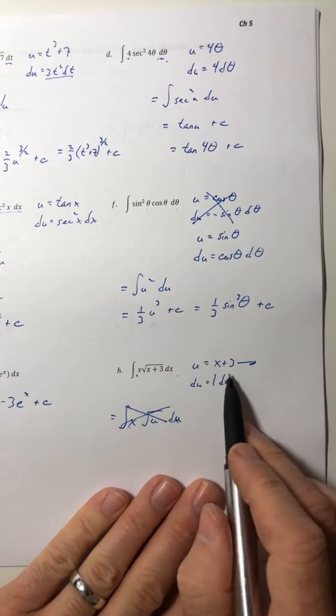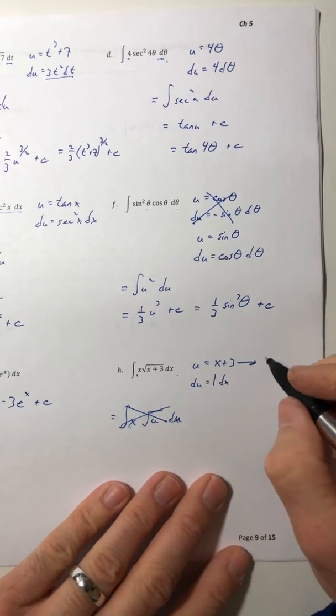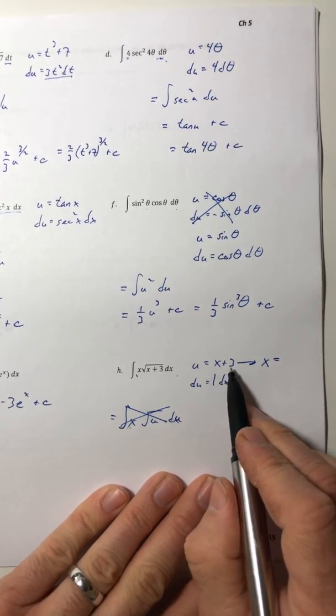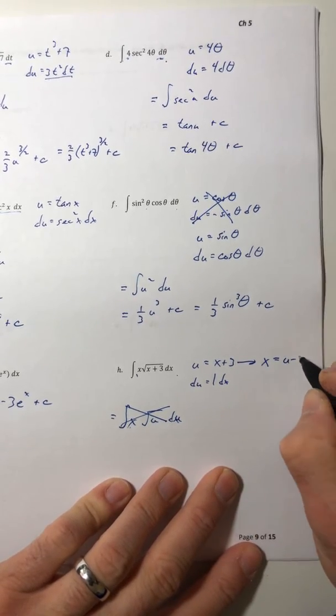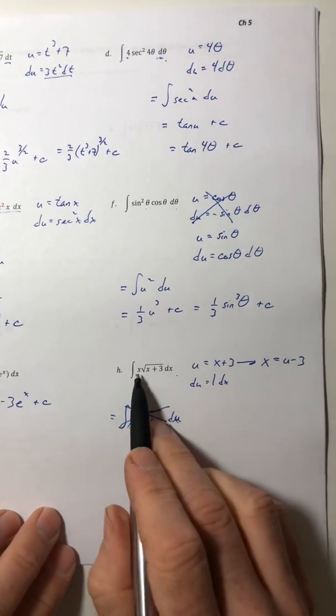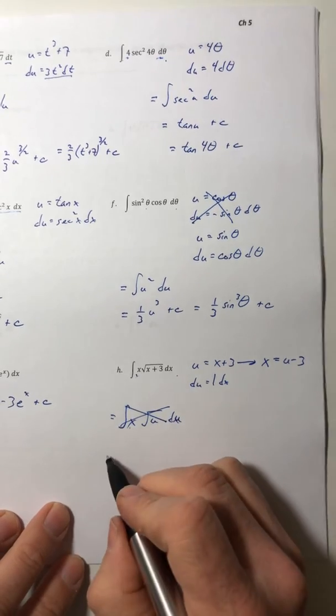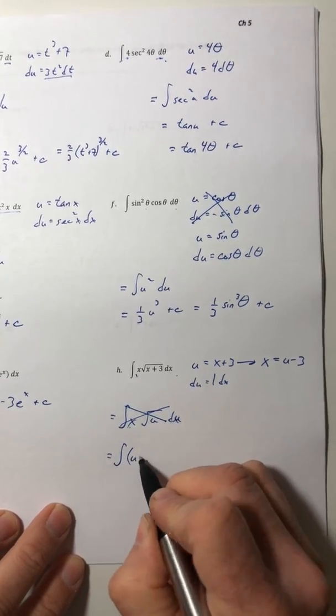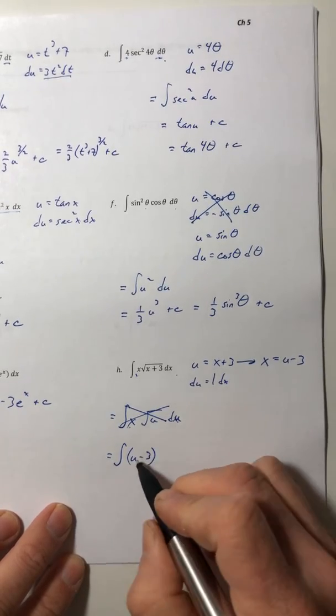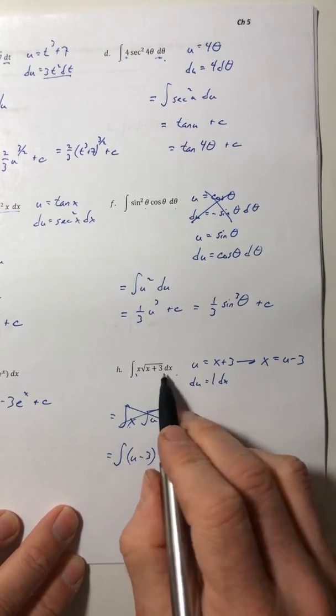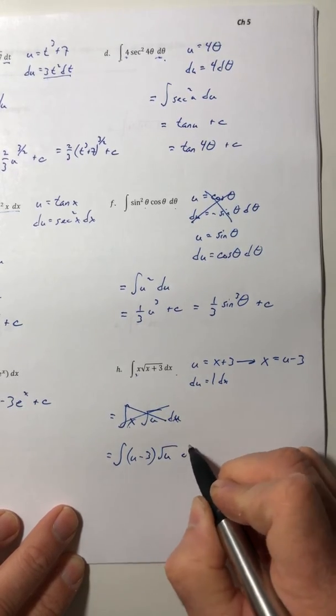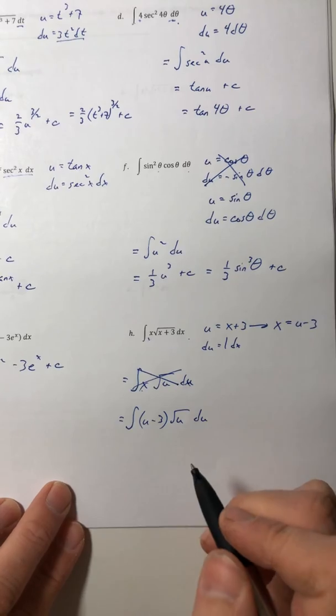So if ever that happens, you can go back to your u-substitution equation, just solve this for x. So minus the three over to the other side, and now you know what this random x can get replaced with. So the x that's on the outside is just u minus 3 times the square root of u du, and now everything is in terms of u.